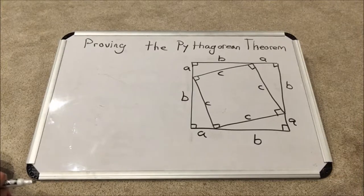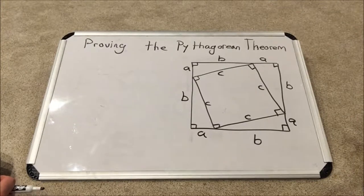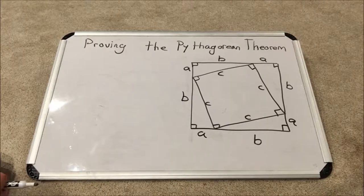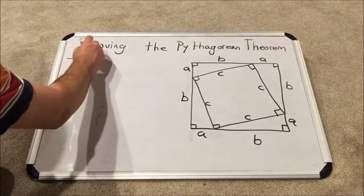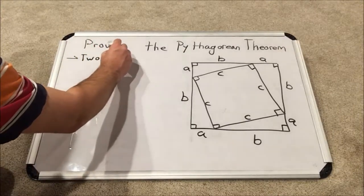Now the backbone for this proof is how we compute the area of the larger square. There are two ways to do so.